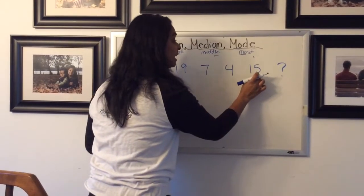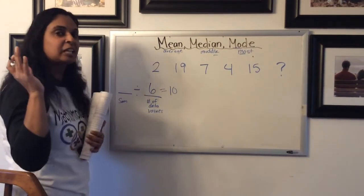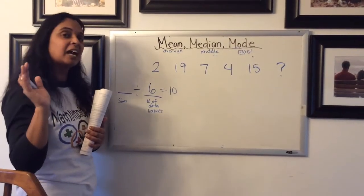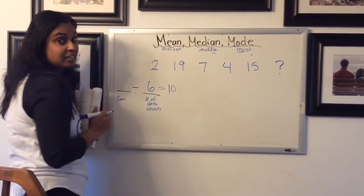There are 1, 2, 3, 4, 5, and then with that one, there's 6. So now I just have to use a little bit of mental math here. Maybe some fact families to help me out. What number divided by 6 gives me 10?